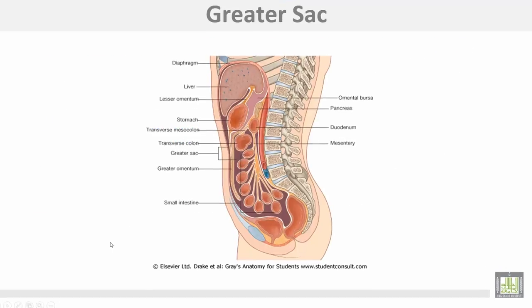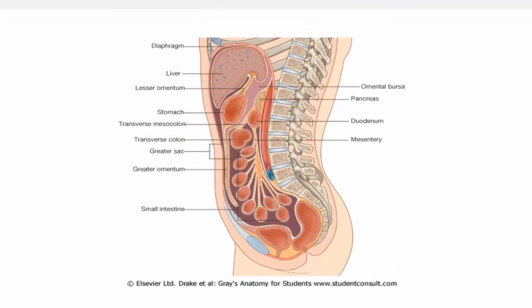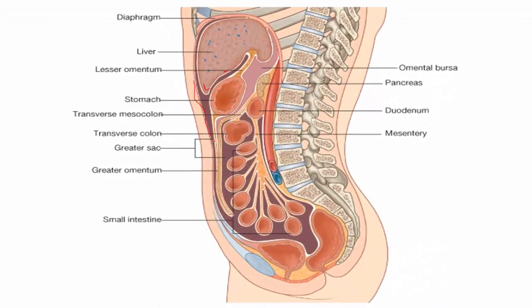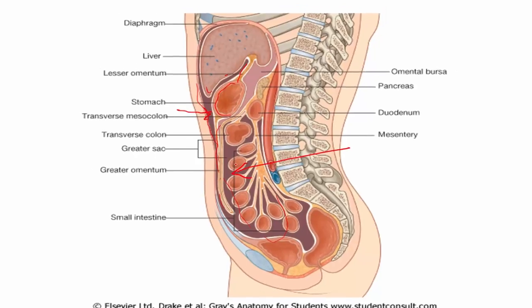This diagram shows the greater sac, which is divided by the lesser omentum, stomach, and greater omentum into an antero-superior part and a posterior part.